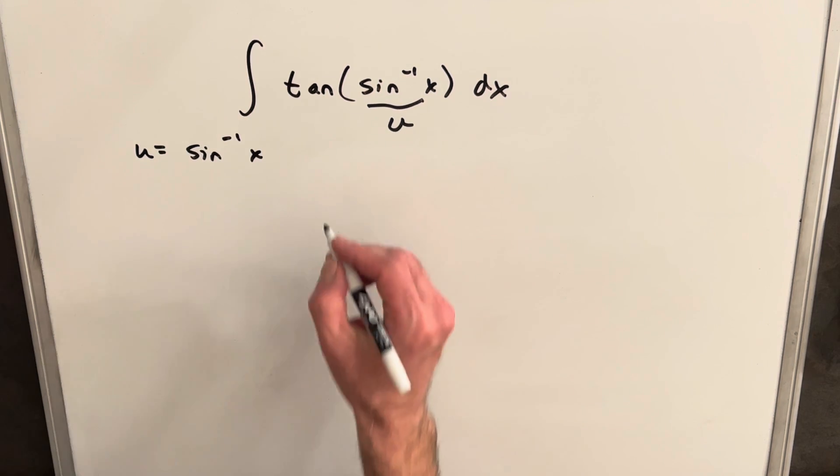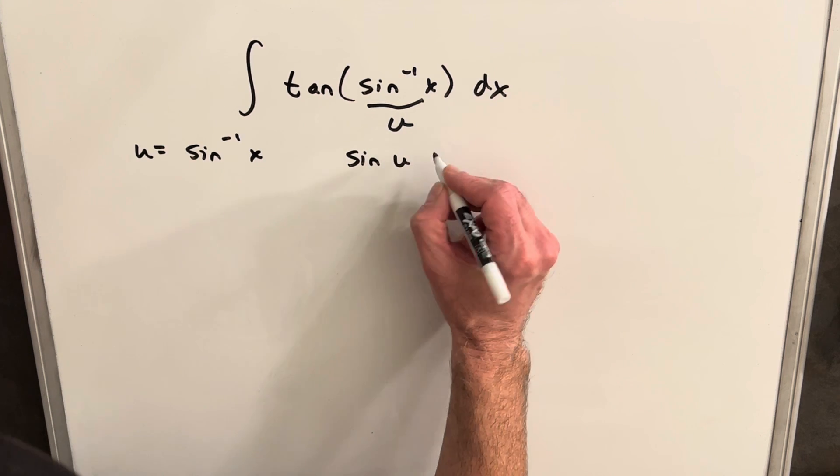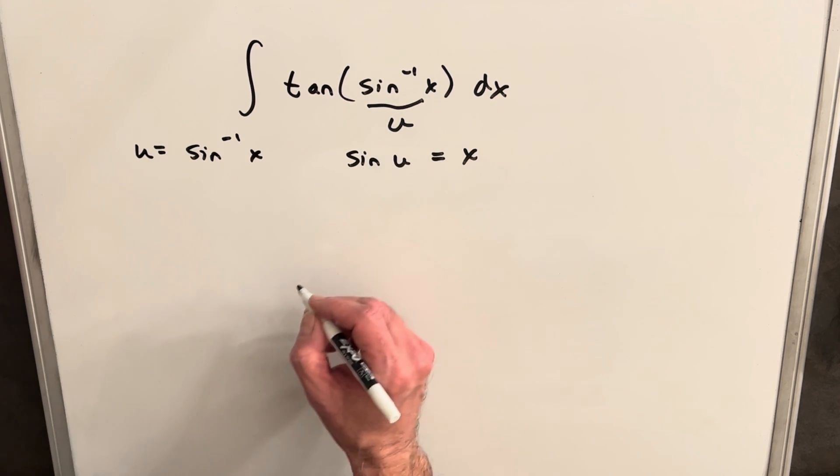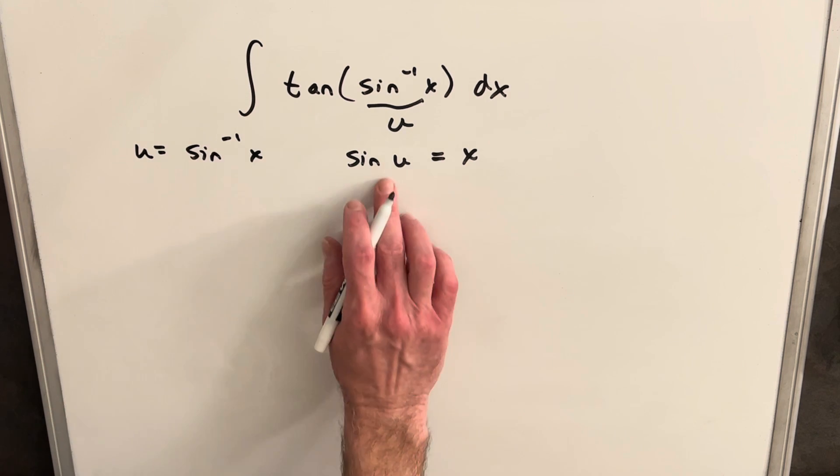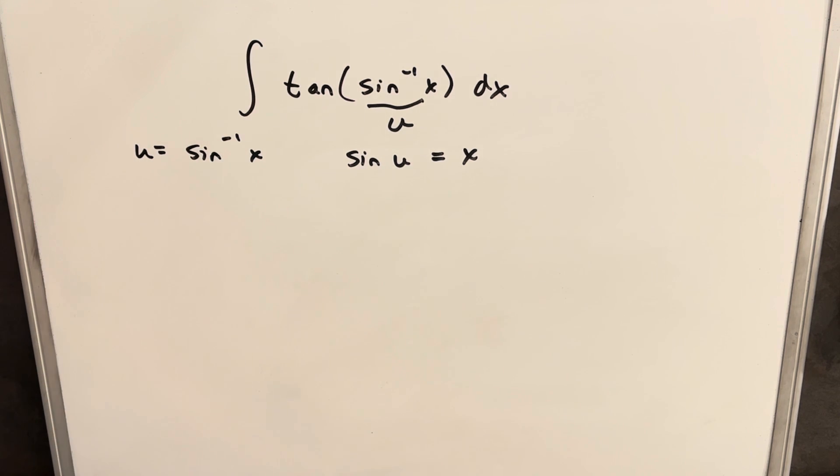But because we have this as an inverse, we can just rewrite this as sin(u) = x. In a lot of cases, it's a good idea to do that just because we have an easier time dealing with the regular sine rather than the inverse sine.